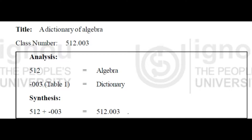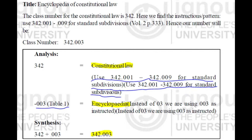Let's take another example: a book on encyclopedia of constitutional law. From the schedules, 342 is constitutional law. The instructions say to use 342.0011 to 342.009 for standard subdivisions. From Table 1, hyphen 003 is for encyclopedia, so remove the hyphen and add it to the number 342.